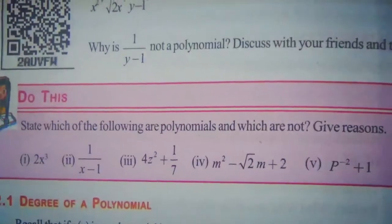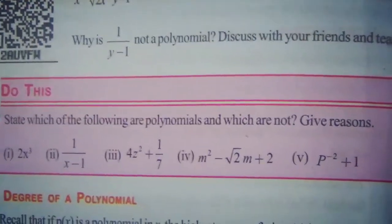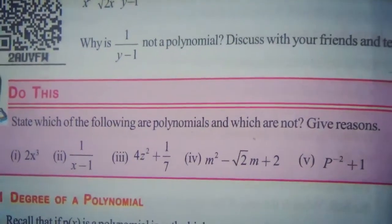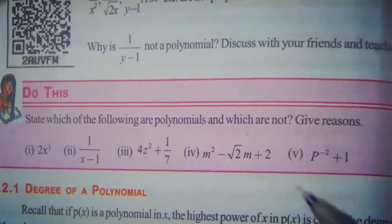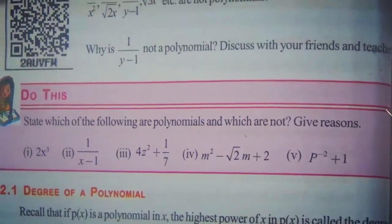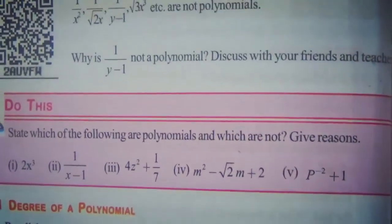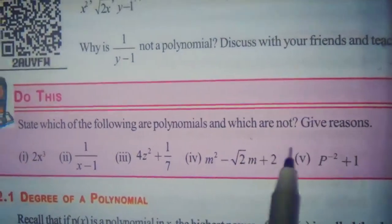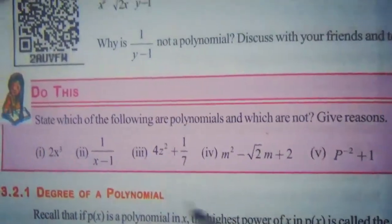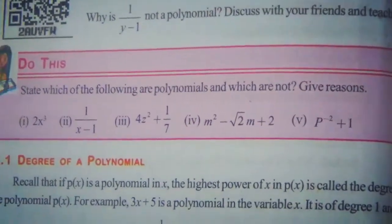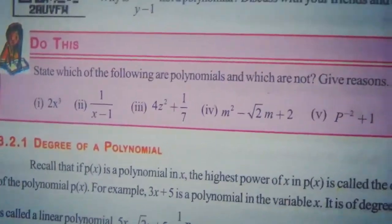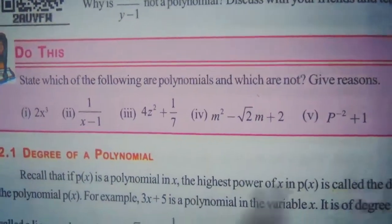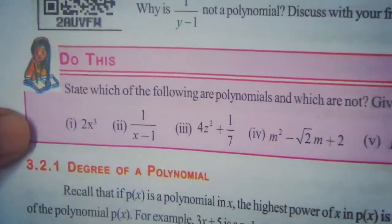We already identified the types: a zero polynomial has highest power 0; a linear polynomial has highest power 1; quadratic has degree 2; and cubic has degree 3. For an expression to NOT be a polynomial, the power of the variable must be negative — the power should not be negative.